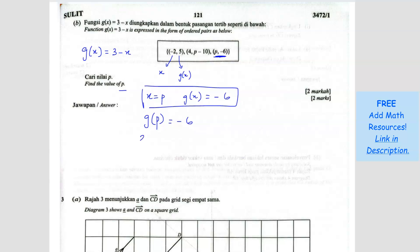So I just substitute. So the g(x) would be 3 minus, instead of 3 minus x, now it's 3 minus p equals negative 6. So p will be equals to 9. Straightforward.